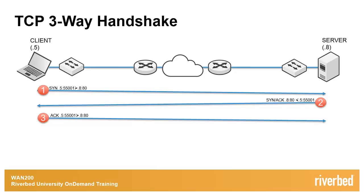Should the initial SYN be successfully received by the destination server, the server will respond, as seen in step two, by sending out the second leg of the TCP three-way handshake, the SYN-ACK. Notice the TCP and IP addressing properties contained in the SYN-ACK are essentially reversed, with the source IP address and TCP port now set as the destination addressing scheme.